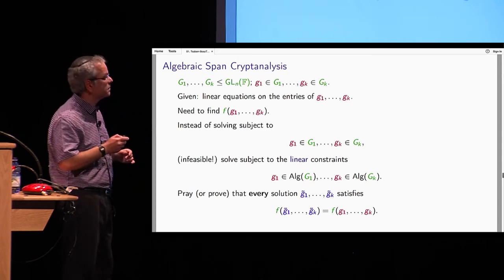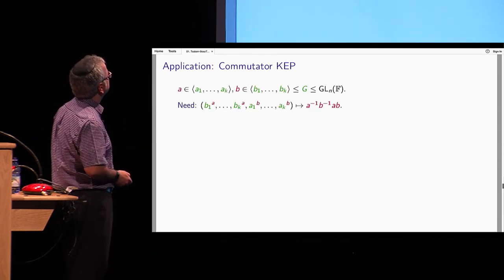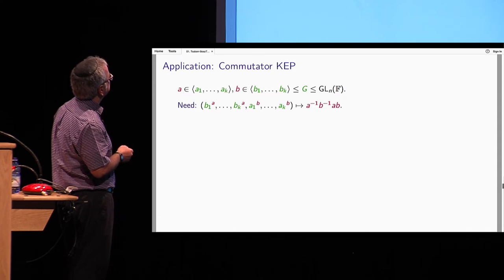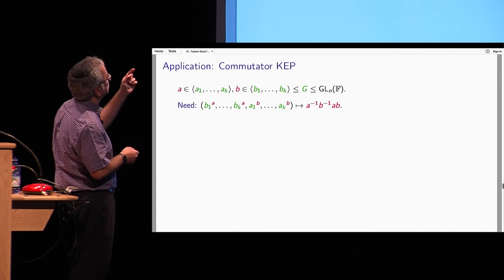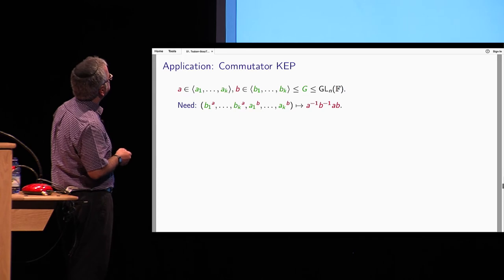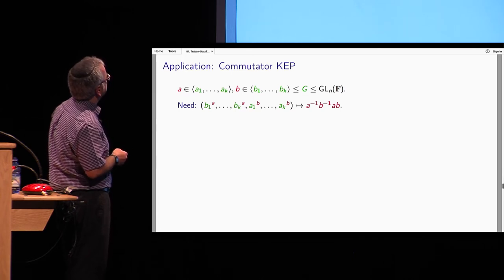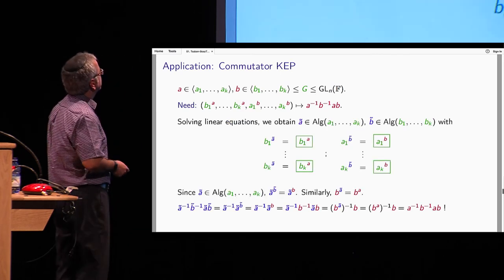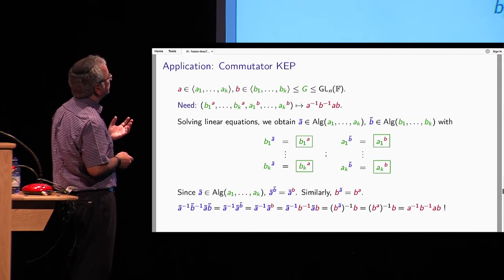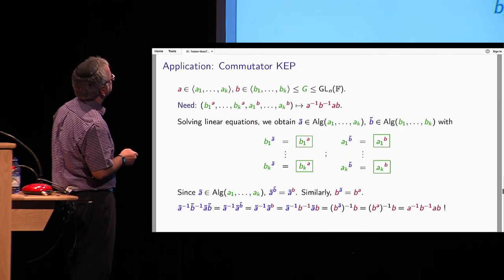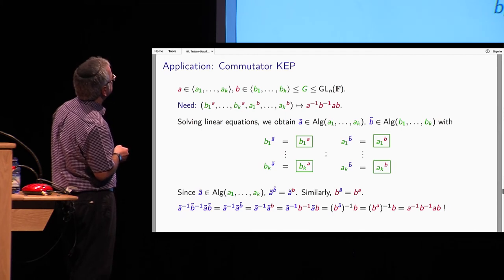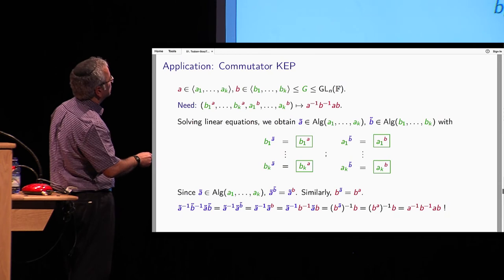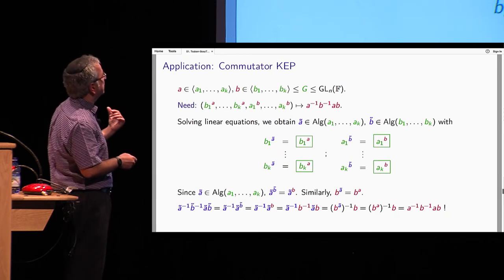So what is algebraic span cryptanalysis in a nutshell? The general setting is that we are given subgroups, some groups of matrices, so subgroups of this group. And there are secret elements G1 to GK inside these groups. And we have linear equations on the entries of these secret matrices. And we need to find some function of these secret matrices, say the shared key, for example. This is the most general problem in this setting. So, instead of solving the linear equations subject to this membership, which is infeasible because these are not linear constraints, what we will do, we will solve the equation subject to the linear constraints. We cannot force it into the group G1, but we can force it into the algebraic span of G1.